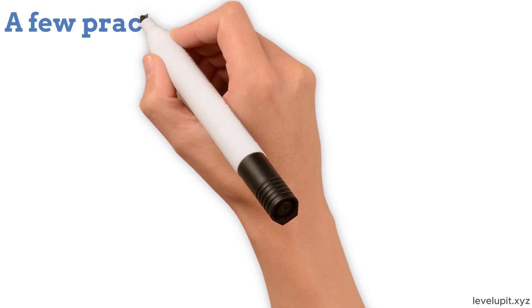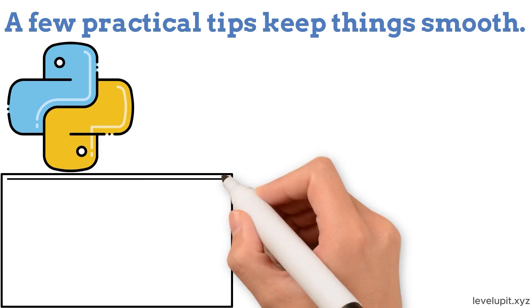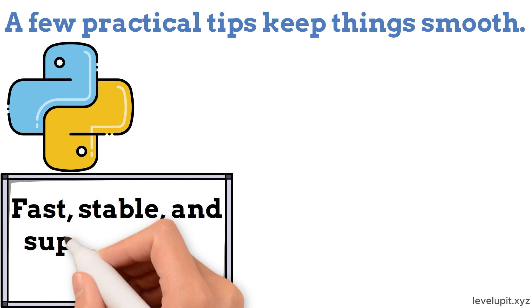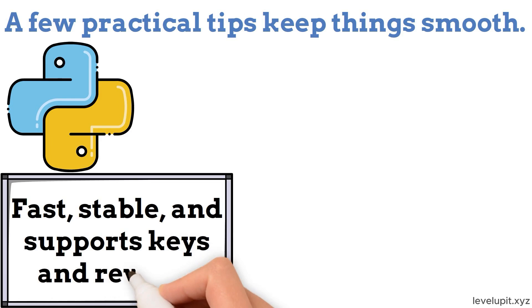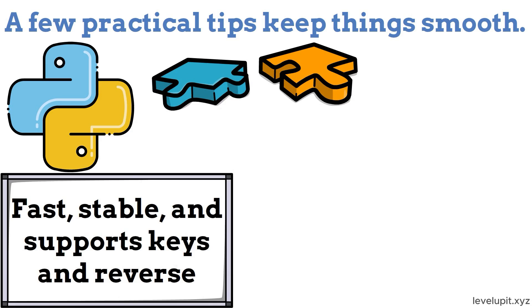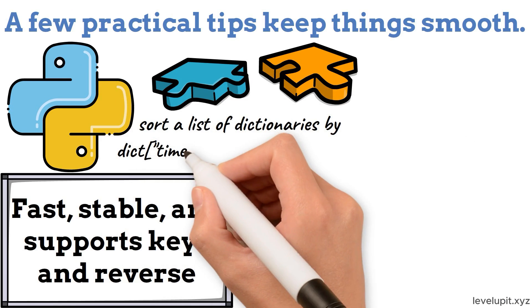A few practical tips keep things smooth. In Python, prefer the built-in sort for general work. It is fast, stable, and supports keys and reverse. If you need to sort complex items, use a key function. For example, sort a list of dictionaries by dictionary['timestamp'] or by length of name.